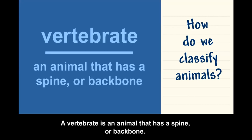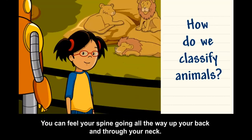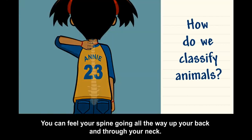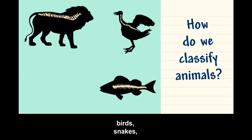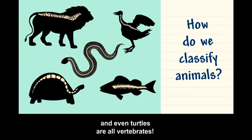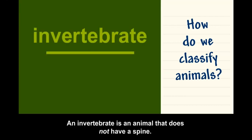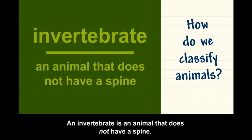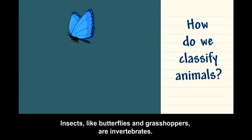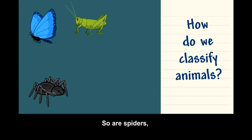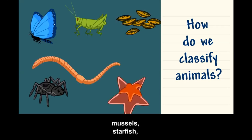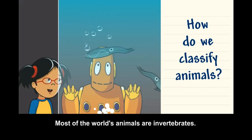All animals are divided into two main groups: vertebrates and invertebrates. A vertebrate is an animal that has a spine or backbone — people are vertebrates; you can feel your spine going all the way up your back and through your neck. Lions, fish, birds, snakes, and even turtles are all vertebrates. Insects like butterflies and grasshoppers are invertebrates, as are spiders, worms, mussels, starfish, and squid. Most of the world's animals are invertebrates.